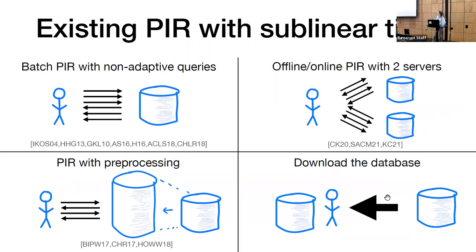I'm going to survey the existing approaches to building PIR with sublinear server time. The first such approach is what we call batch PIR. In this setting, we have our client make a batch of queries to the server at once. The server answers all queries together in time linear in the database size, and then sends all the answers back to the client. So the per-query amortized server time is sublinear in the database size.